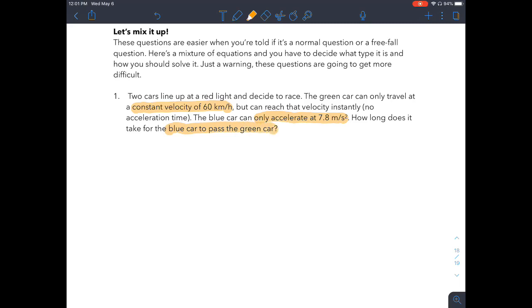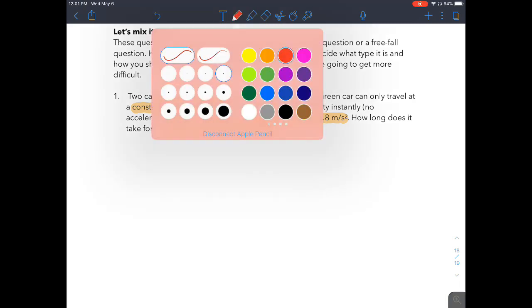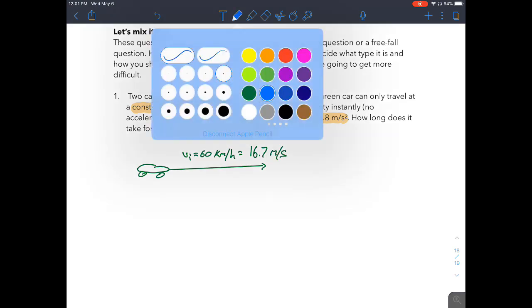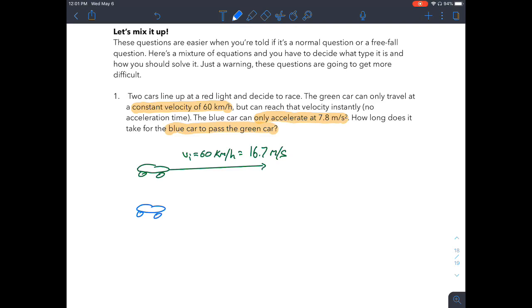OK, because if you think about these two cars starting, let's do a green car here. These are fast cars. So there's the green car. This green car is going to instantly be going with an initial velocity of 60 kilometers per hour, which if we do that calculation, we're going to get 16.7 meters per second. The blue car is going to start with an initial velocity of zero, but it has an acceleration of 7.8 meters per second squared.